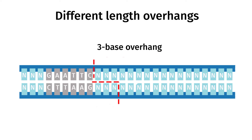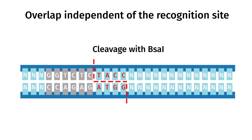For example, the commonly used BSA1 generates a four nucleotide overhang. Because the cleavage site is outside the recognition site, the exposed overlap is independent of the recognition site and essentially random. Therefore, a typical type 2S enzyme that creates a four nucleotide overhang can generate 256 possible overhangs. These unique four base overhangs are often referred to as fusion sites.